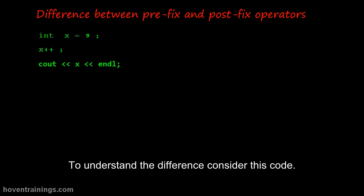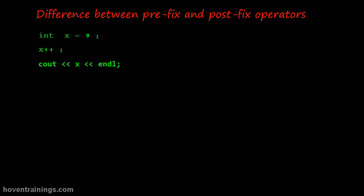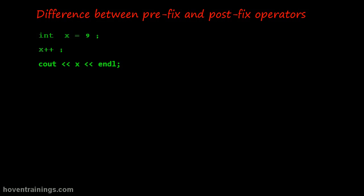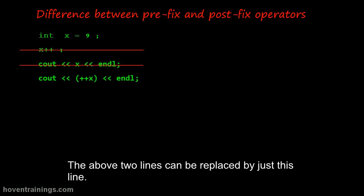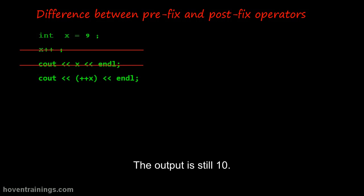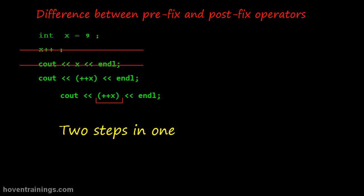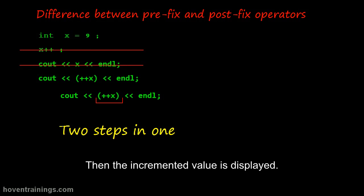To understand the difference, consider this code. We know it will display 10, but it is possible to shorten this code. The above two lines can be replaced by just one line, and the output is still 10. The prefix increment first increases the value of x, then the incremented value is displayed.